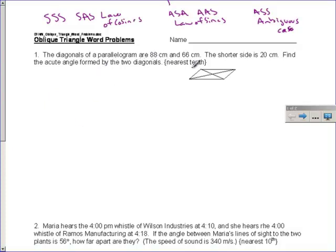I've got a diagonals of a parallelogram, or 88 and 66, in this little picture here. It says the shorter side is 20. And I have to find the acute angle formed by these diagonals. Now, if you didn't know, in a parallelogram, the diagonals will bisect each other. So, I'm going to blow this picture up here and make it a little bit larger. So, let's take a look at that left-hand side, just that triangle on the left-hand side.